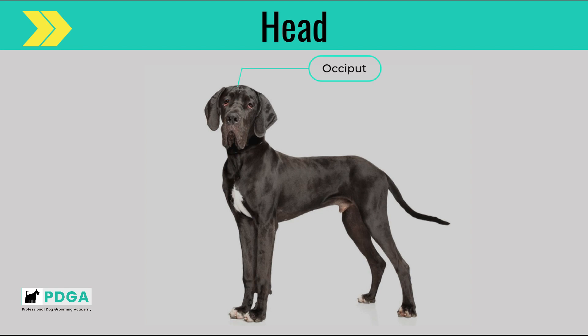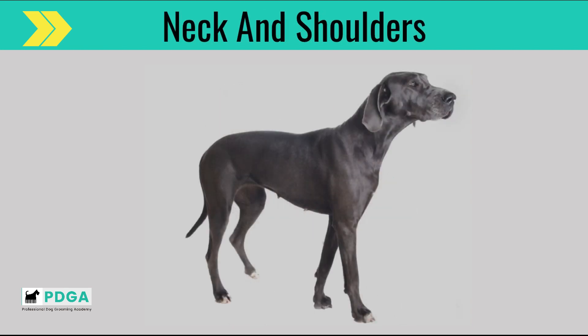The occiput is the highest point on the back of the skull and can be very prominent on some breeds. The ears — the visible portion of the outer ear is called the pinna.